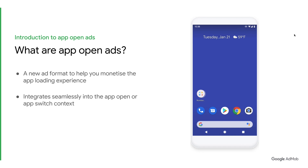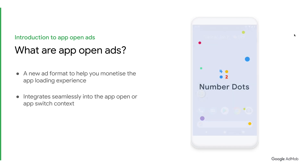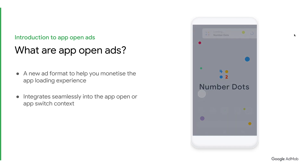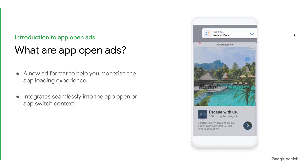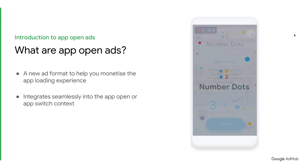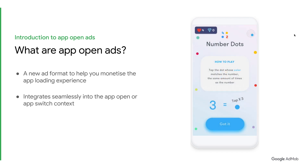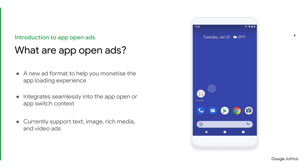Specifically, AppOpenAds will have a small branding area that takes up the top 15% of the screen. This ensures that users are clear they have entered the intended app, and that users can easily transition back to the app. The bottom 85% of the screen is then taken up by the ad itself. AppOpenAds support image, rich media, and video types.